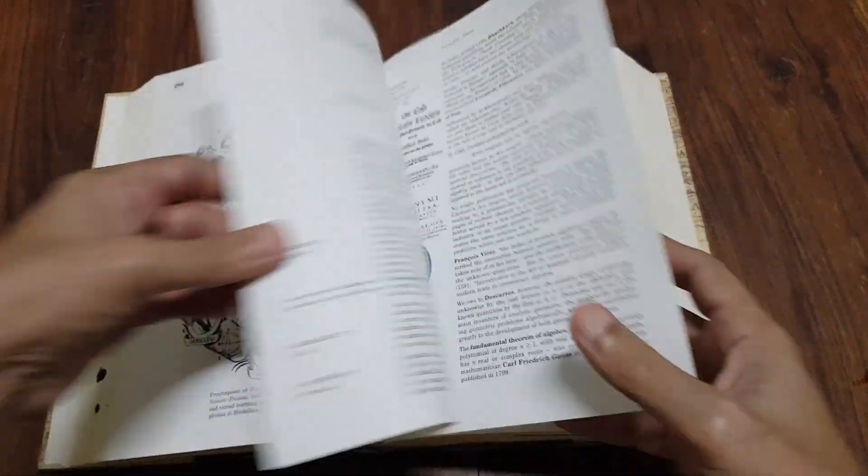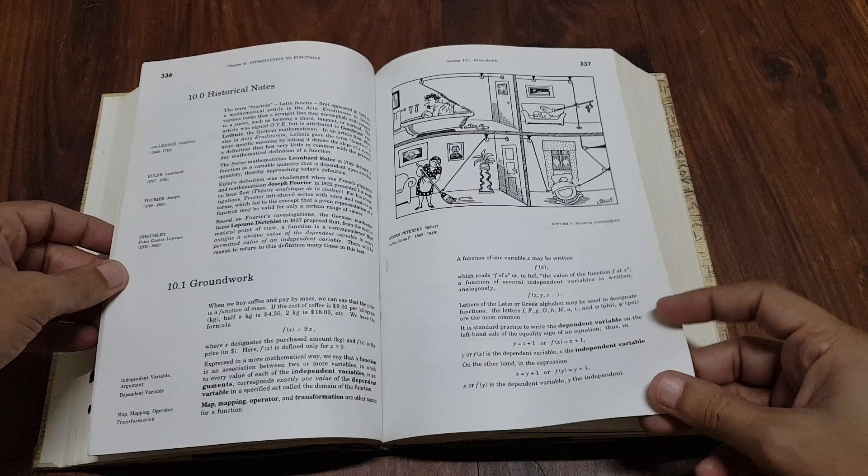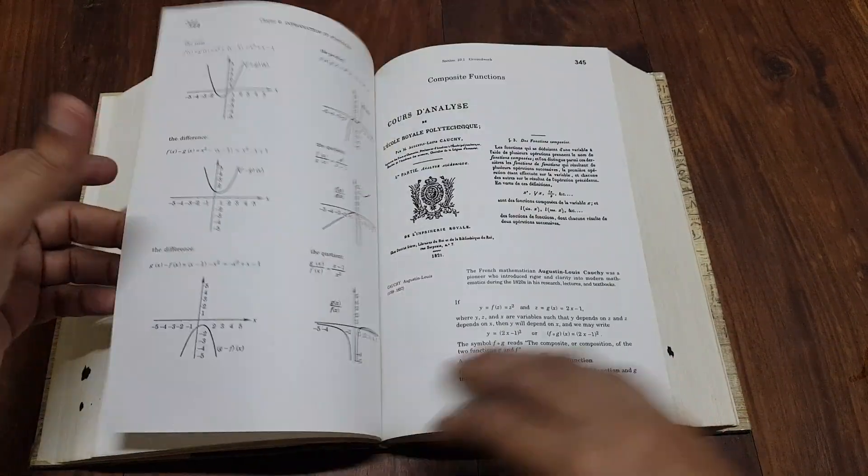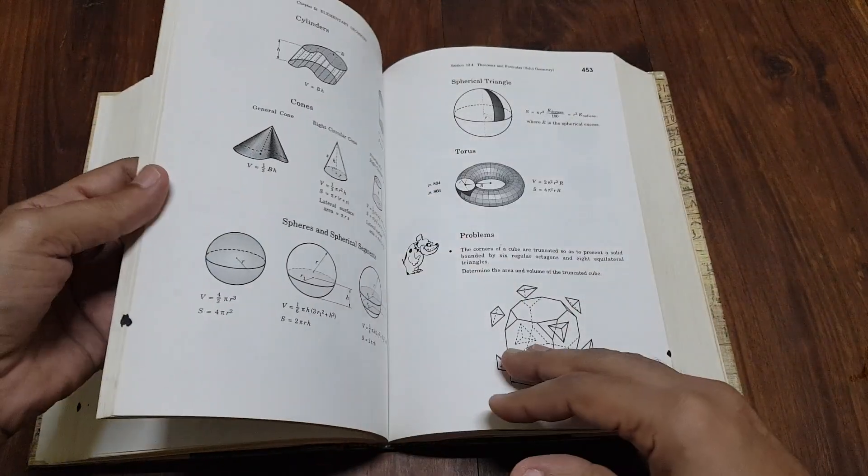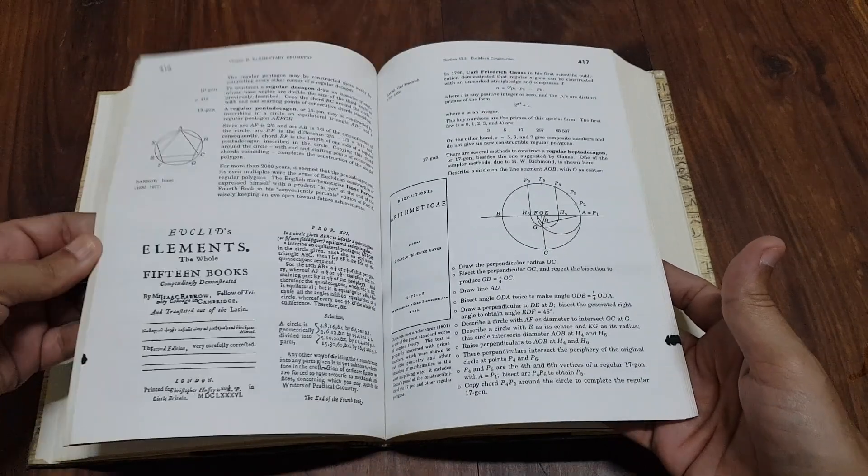The book covers a vast array of topics, making it a valuable resource for a broad spectrum of readers, from high school students to those with more advanced mathematical knowledge. It includes lesser-known topics and historical anecdotes, adding depth and richness to the content.